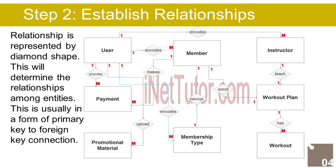After we have specified our entities, it is time to connect or establish a relationship among the entities. 1. User encodes/updates/manages the member information — 1 to many relationship. 2. User encodes/updates/manages the gym instructor information — 1 to many relationship. 3. User encodes/updates/manages type of membership application — 1 to many relationship. 4. User processes the payment made by the customer — 1 to many relationship. 5. User uploads promotional material — 1 to many relationship.